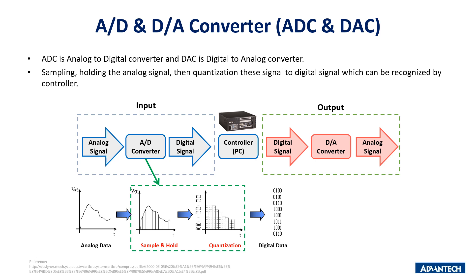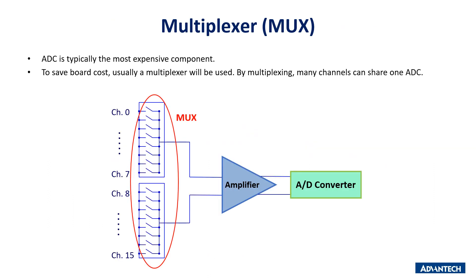For the output part, it is the reverse of the input. A DA converter transfers the PC's digital data to analog data, which can then be measured with a meter as voltage or current. AD converters are usually the most expensive component in the DAQ card. To use one ADC for many channels, we rely on a multiplexer to switch channels so the ADC can convert channel data in sequence.